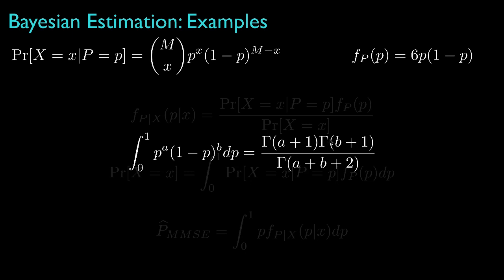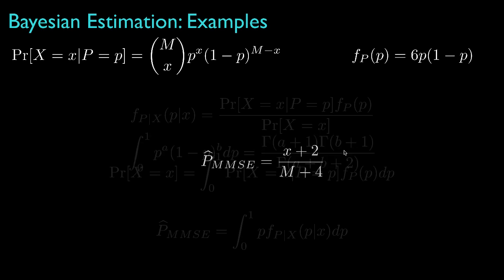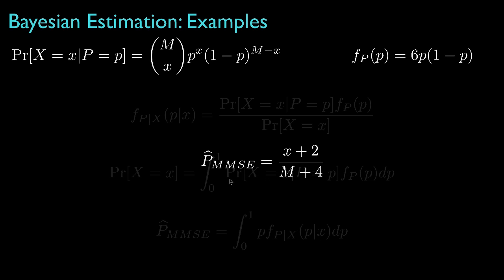Both integrals can be evaluated using the relationship that the integral of p raised to the power a times (1 minus p) raised to the power b, integrated from 0 to 1, equals a ratio of gamma functions. When a and b are integers, the gamma function gives factorials, leading to the result that the minimum mean square error estimator is the number of observed successes plus 2, divided by the number of trials plus 4.